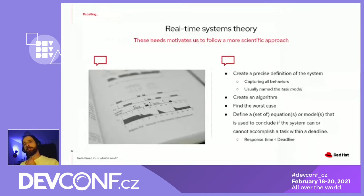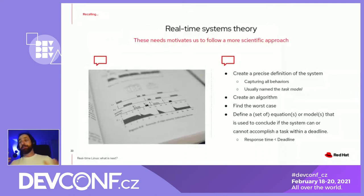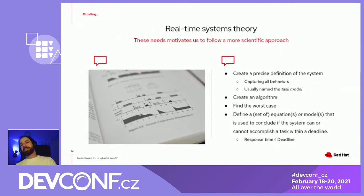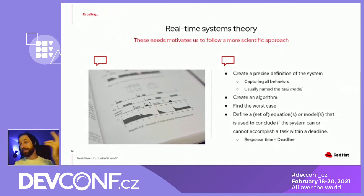So how can we try to make Linux more scientifically compliant? We can try to follow the algorithm that people in academia use: trying to create a precise definition of the system, create an algorithm, trying to find worst case, and define some set of equations.